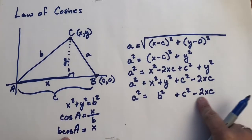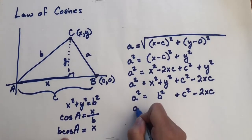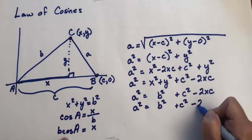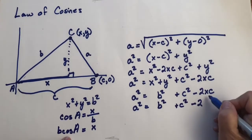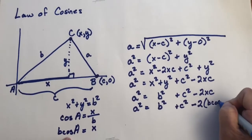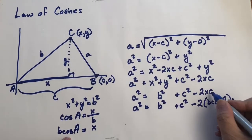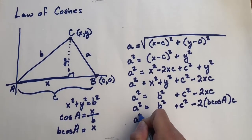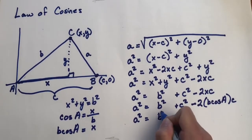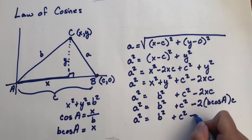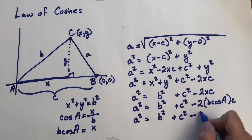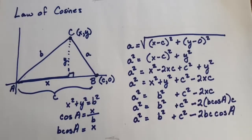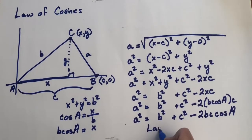We're going to make that substitution over here. So we have A squared equals B squared plus C squared minus 2. Now here comes our substitution. Our X is B cosine A times C. Now let's rearrange this to make it look a little bit nicer. We have A squared equals B squared plus C squared minus 2BC cosine A. And this is our law of cosines.